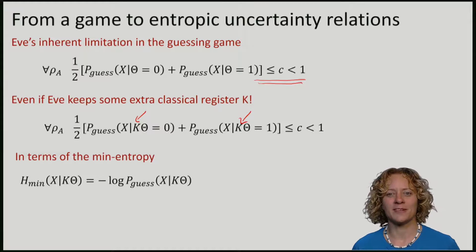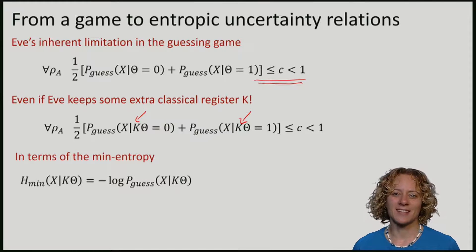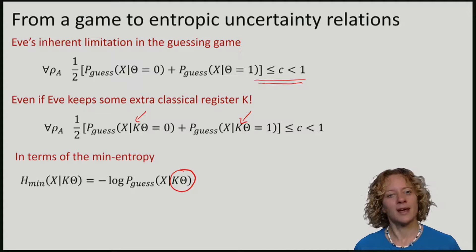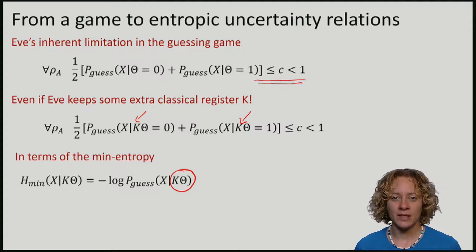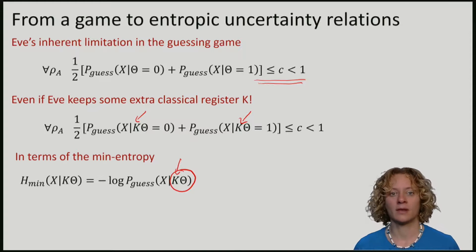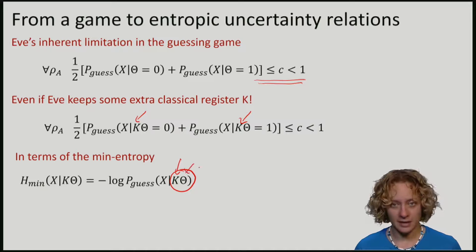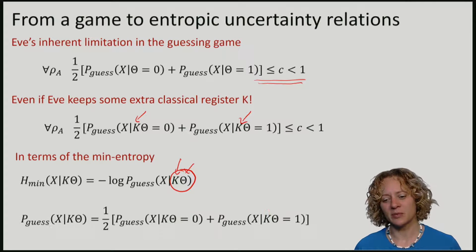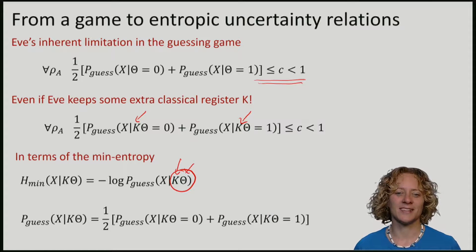Let's remember that the min entropy is nothing else but minus the log of the probability of guessing X given everything that Eve has. And what Eve has here is potentially some classical register K and, of course, the basis information theta that Alice sent her.